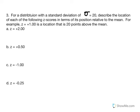Number 3. For a distribution with a standard deviation equal to 20, describe the location of each of the following z-scores in terms of its position relative to the mean. For example, z equals positive one is a location that is 20 points above the mean. So for part A, the positive sign tells us we're above the mean, and the z-score of 2 means 2 standard deviation units above the mean. So 2 times 20 indicates this score is 40 points above the mean.